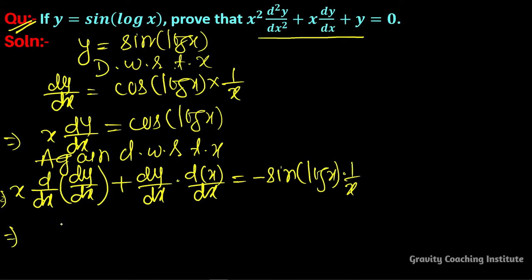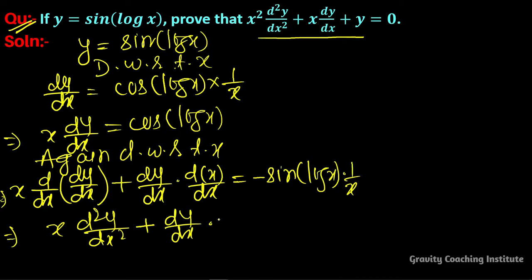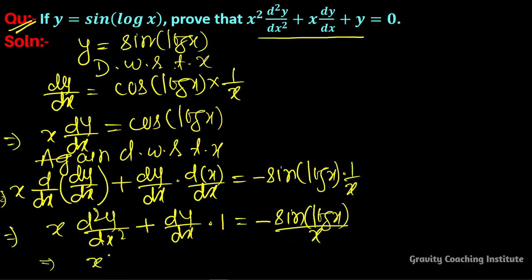This gives x(d²y/dx²) plus dy/dx, and the value equals x times minus sin(log x) divided by x. Taking x to the left side and multiplying all terms, we get x²(d²y/dx²) plus x(dy/dx) equals minus sin(log x).